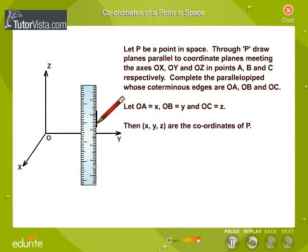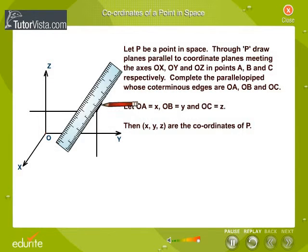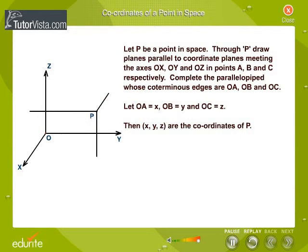Through P, draw planes parallel to coordinate planes meeting the axes OX, OY and OZ in points A, B and C respectively. Complete the parallelepiped whose coterminous edges are OA, OB and OC.